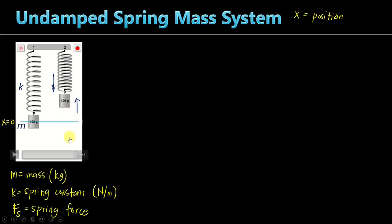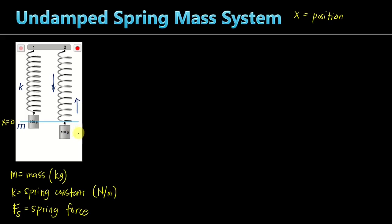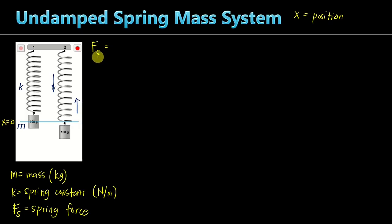When the mass is above, the force is directed downward towards equilibrium. When the mass is below, the spring pulls it upward towards equilibrium. That is why we call this spring force a restoring force. Hooke's Law tells us that the spring force is always proportional to the displacement, so Fs = -Kx, where K is the proportionality constant — the spring constant. The negative sign reflects that it is always opposite in direction to X, because it is a restoring force.